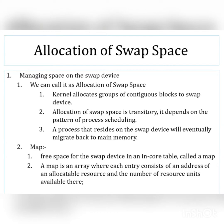Now let's see the allocation of swap spaces — also called managing space on the swap device. We need to focus on three things. The first one is that the kernel allocates a group of continuous blocks to the swap device. The swap device resides in virtual memory, that is in the secondary device, and we need to allocate a continuous group of blocks to it.